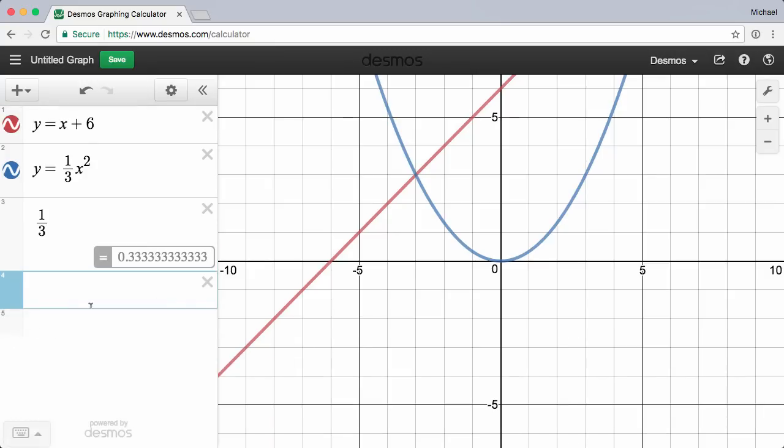To identify points of interest like x and y intercepts, or points of intersection, simply tap or click and Desmos will reveal the coordinates.